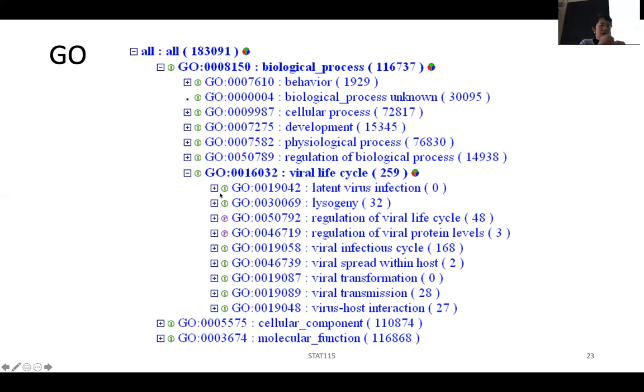So basically, this is a tree. Initially, in the tree, you have all. That's kind of the bulk of the stem of the tree. And then when it first starts to branch, there are three different branches. One is the biological process, one is the cellular component, one is the molecular function. And the tree has three branches. And each branch will continue to branch out. And you will have more and more specific annotations. For example, if we look at a viral lifecycle, there is the latent virus infection. There is the viral spread within the host. So you can see it really gets much more specific. And each of them, it tells you, so you can see here, it has a number.